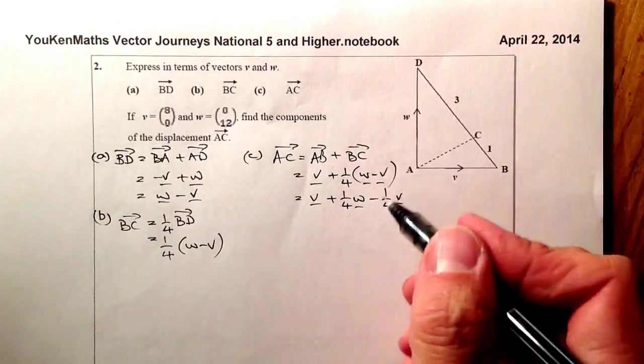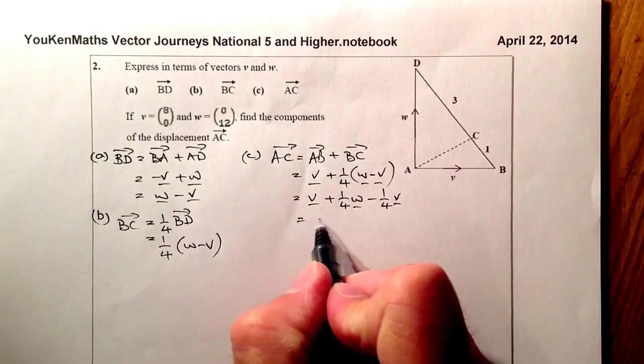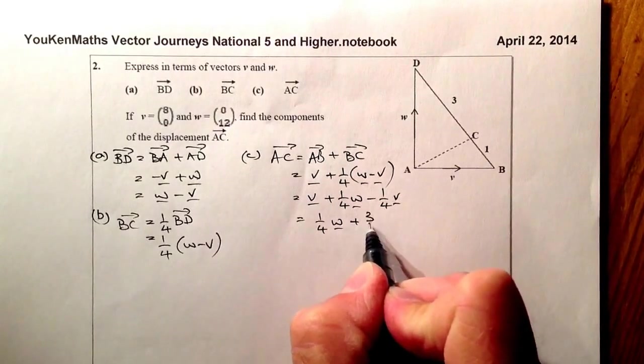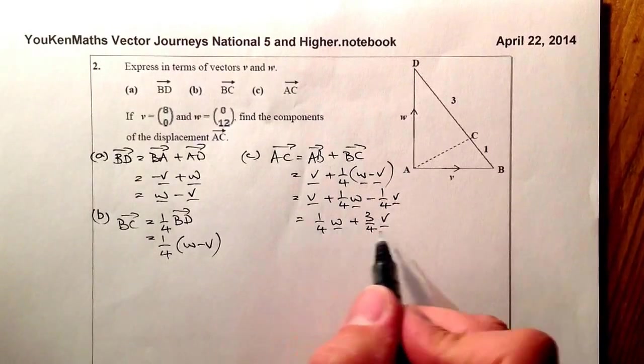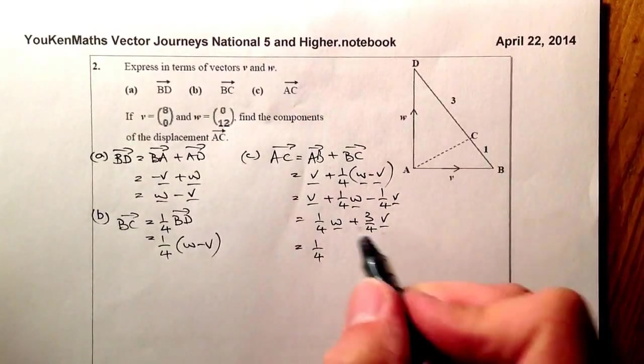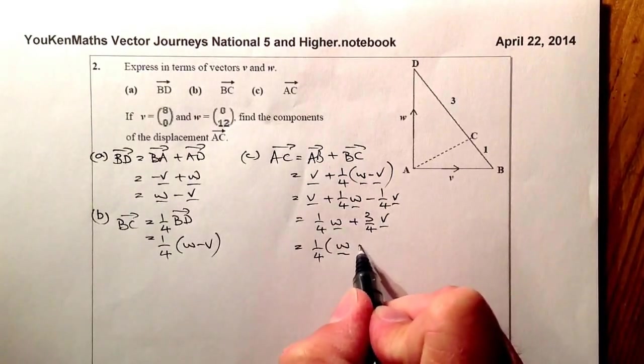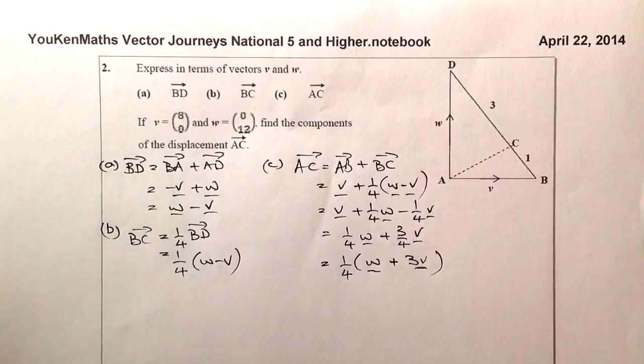I'll gather up the parts that I can here. So if I gather these bits up, so what I have is a quarter of W, and that'll be plus three quarters of V. What I'll do from that there is I'll take a common factor out of a quarter. What I'll have is W, a quarter of W, and that'll be plus three V. And that'll be the final answer for that part.